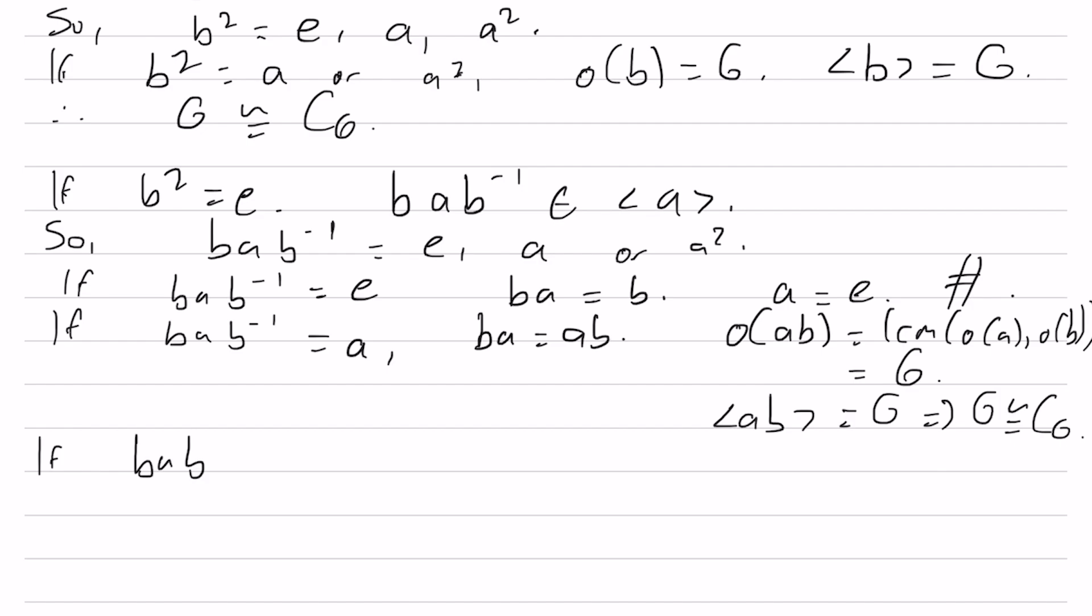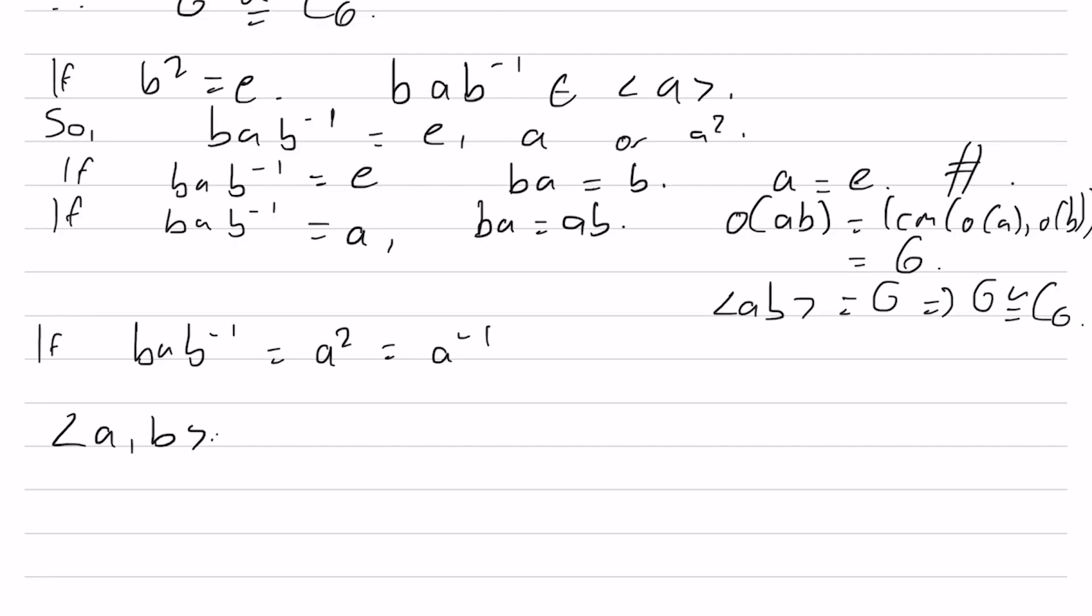Finally, if BAB inverse equals A squared, which is equal to A inverse because A is of order 3, well, then let's just have a look at this subgroup of G that is generated by A and B.